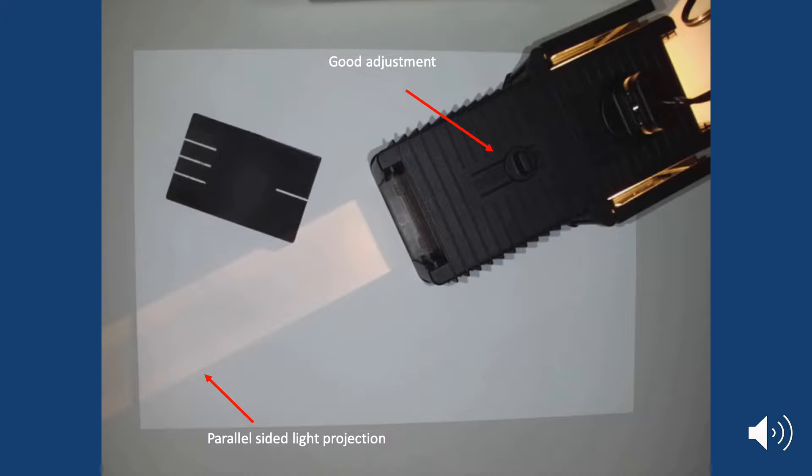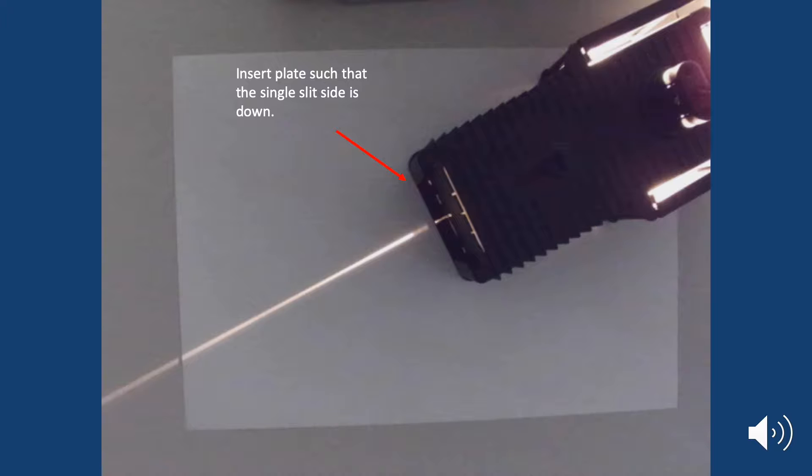At this point you grab your single slit gate and place it into the Hodson lightbox so that you get a nice beam of light coming out of it.